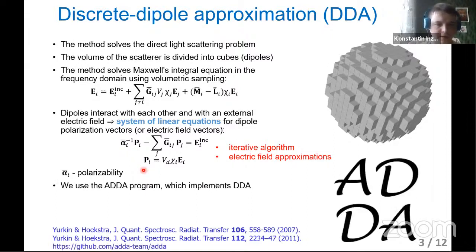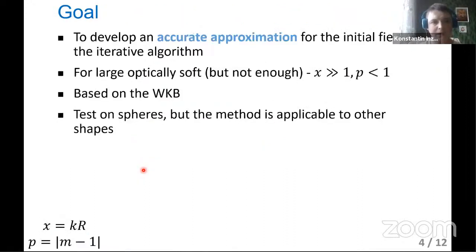We use the ADDA program which implements DDA. The goal of our work is to develop an accurate approximation for the initial field of the iterative algorithm. It works with large optically soft particles, but not enough. We can't use standard algorithms like undisturbed incident electric field or zero electric field. This algorithm is based on Wenzel-Kramers-Brillouin approximation. We test on spheres, but we want to generalize it for other shapes.